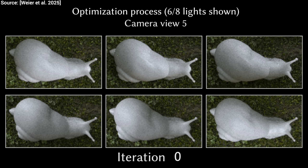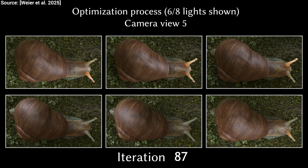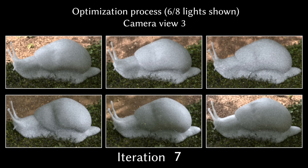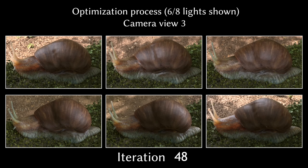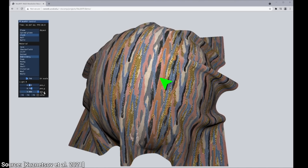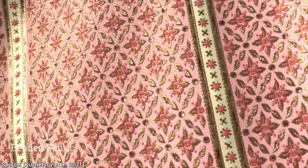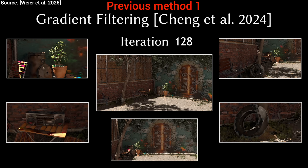Amazingly, it starts with blank geometry, then learns the object's physics directly from the photos. Instead of simply copying the colors of a snail's shell, it reverse engineers its actual material properties — like its texture, its glossiness, and even how light scatters beneath its translucent skin. This is called inverse rendering.